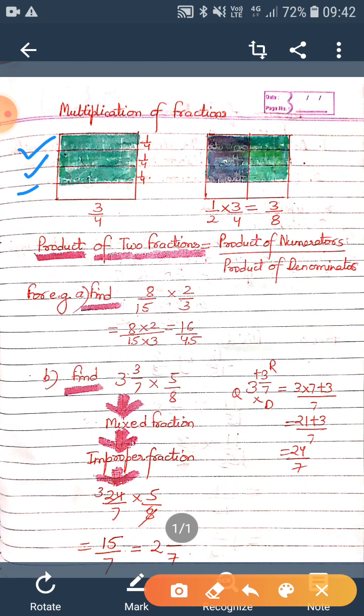Three parts out of four are shaded by this green color, and one part is left. So this represents our fraction three by four. Now if we have to find out half of three by four, what we have to do is draw a line in the middle over here.